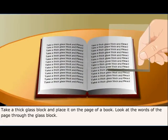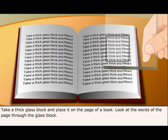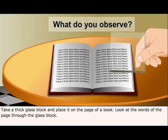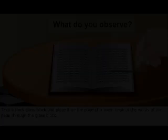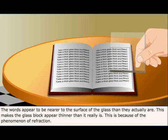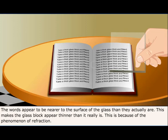Take a thick glass block and place it on the page of a book. Look at the words of the page through the glass block and observe what you see. The words appear to be nearer to the surface of the glass than they actually are. This makes the glass block appear thinner than it really is. Again, the phenomenon of refraction is responsible for this.